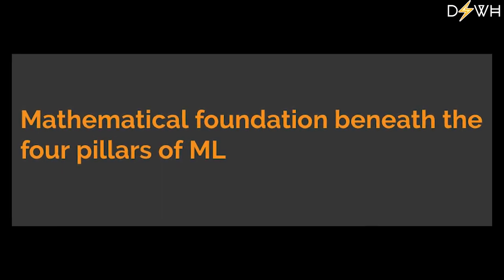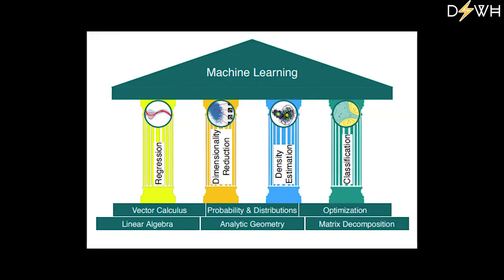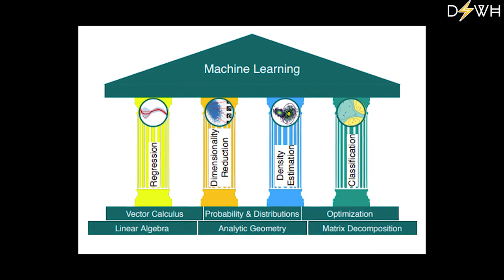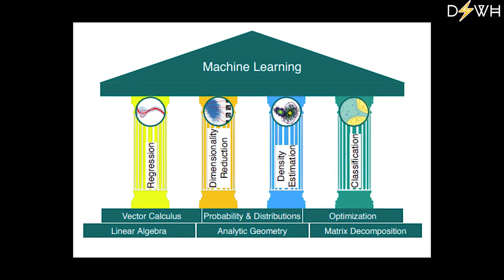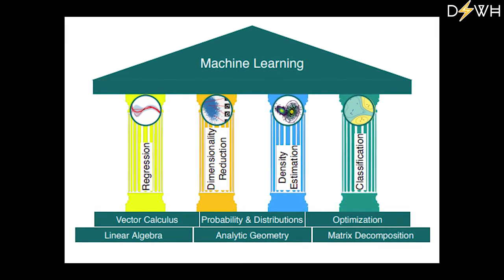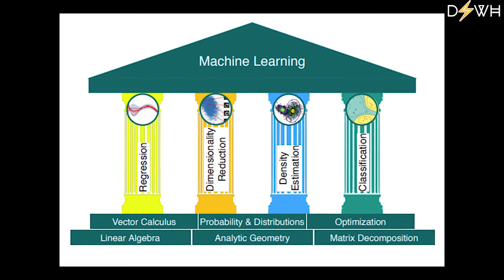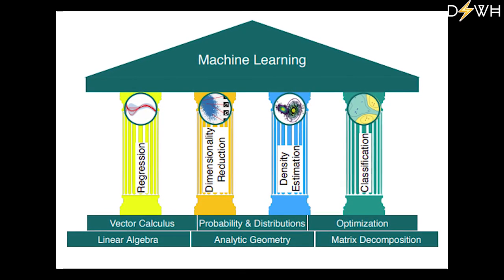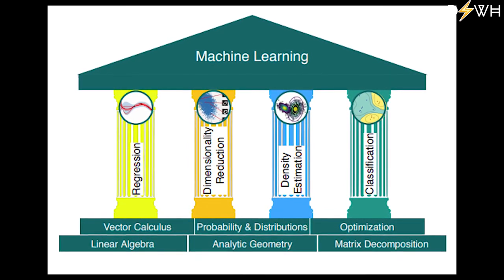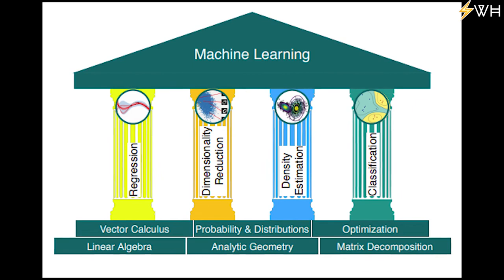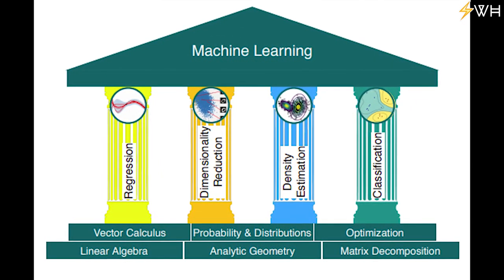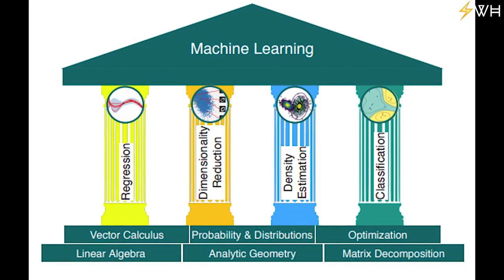Let's talk about the mathematical foundations beneath the four pillars of machine learning. The four pillars are basically regression, classification, dimensionality reduction, and density estimation. From a career perspective, if you really want to pursue data science, especially machine learning and deep learning modeling, you must at least be familiar with topics like linear algebra which covers vectors and scalars, tensors, and matrices.